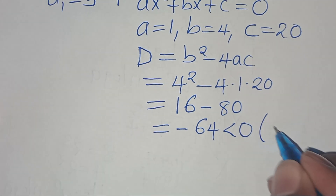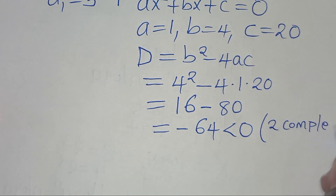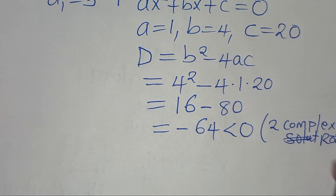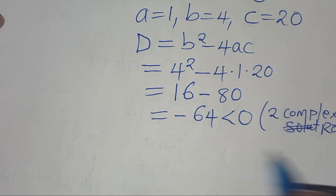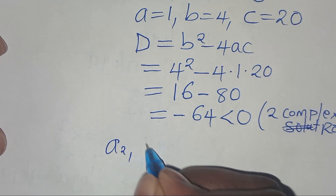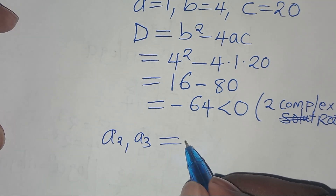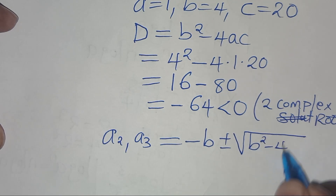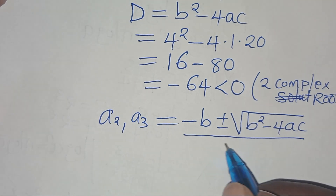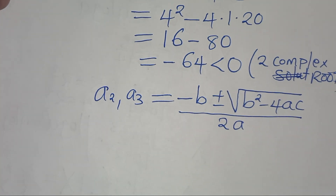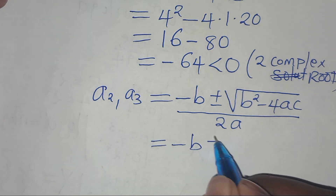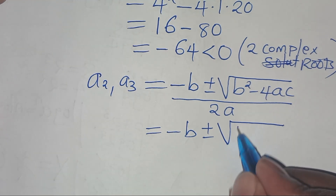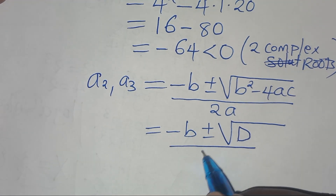This implies that we have 2 complex roots. We can solve for these by applying the quadratic formula, that is a₂, a₃ equals minus b, plus or minus the square root of b squared minus 4ac — which is the same thing as the discriminant — divided by 2 times a.